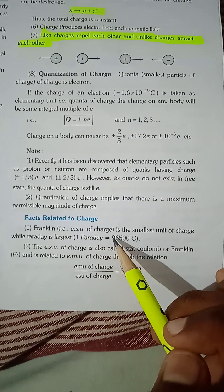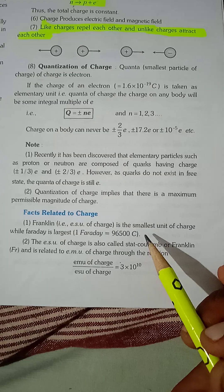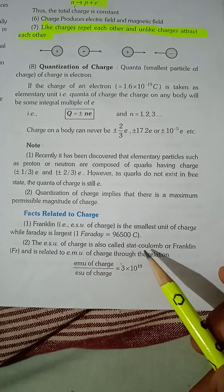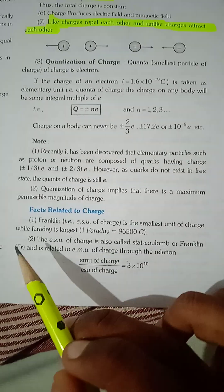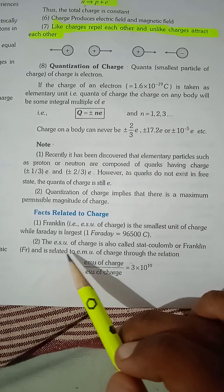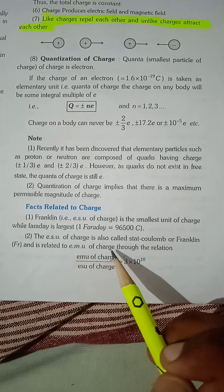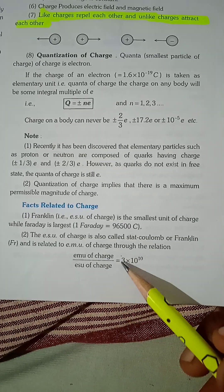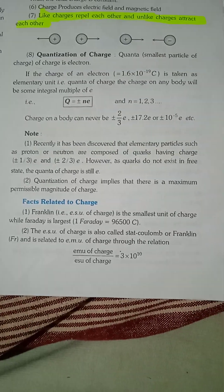One Faraday is 96,500 Coulomb. The ESU of charge is also called Stat Coulomb. For handling, it is related to EMU of charge through the relation: EMU of charge upon ESU of charge equals 10 to the power 10.